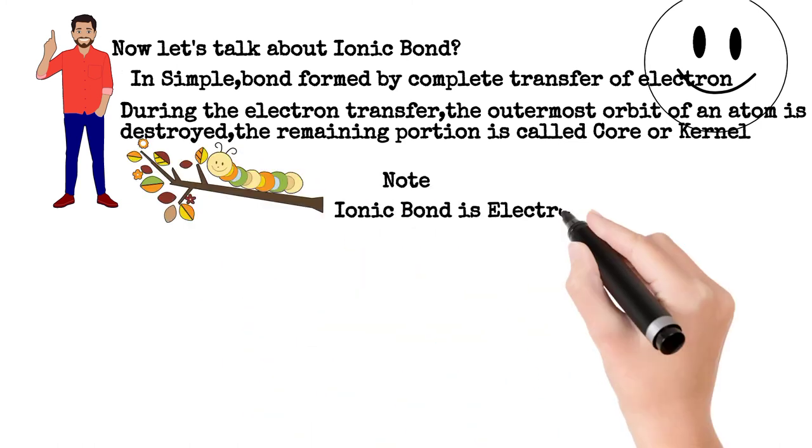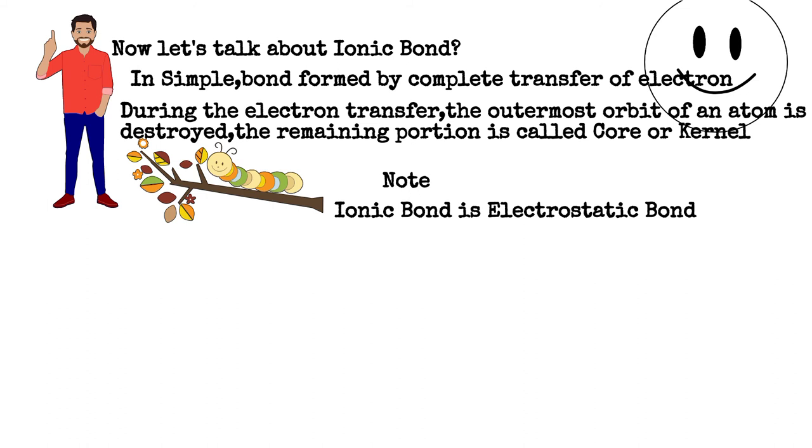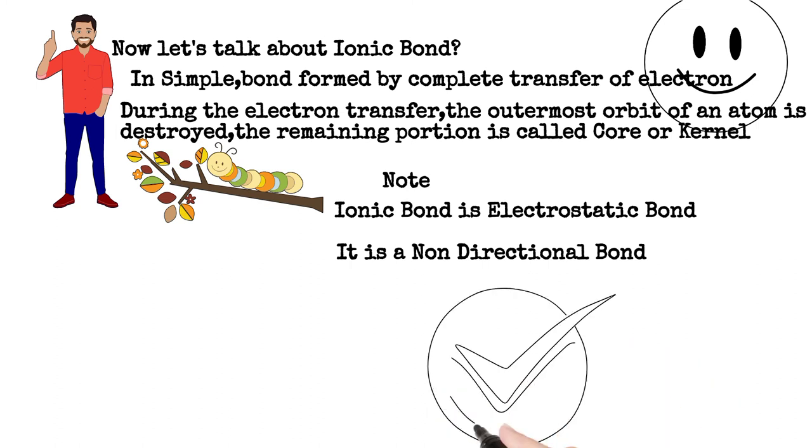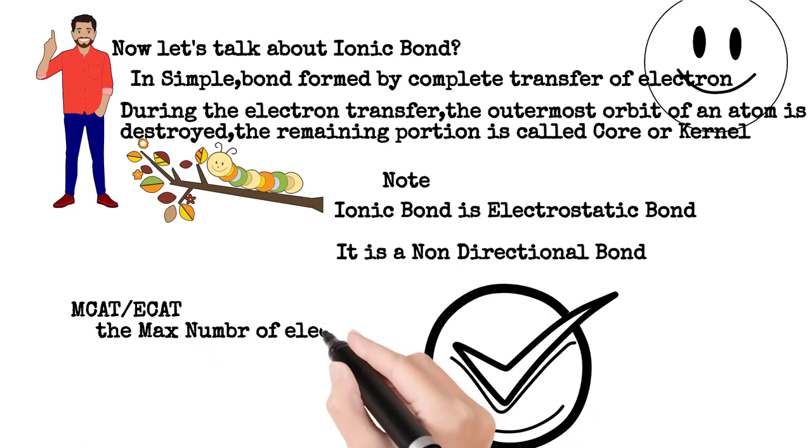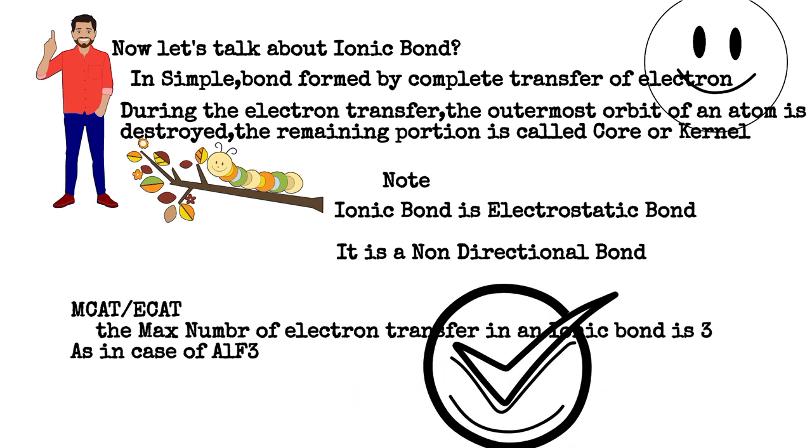Know that the ionic bond is an electrostatic bond. It is formed between two charges, like sodium and chlorine (chloride). It is a non-directional bond in an ionic crystal.